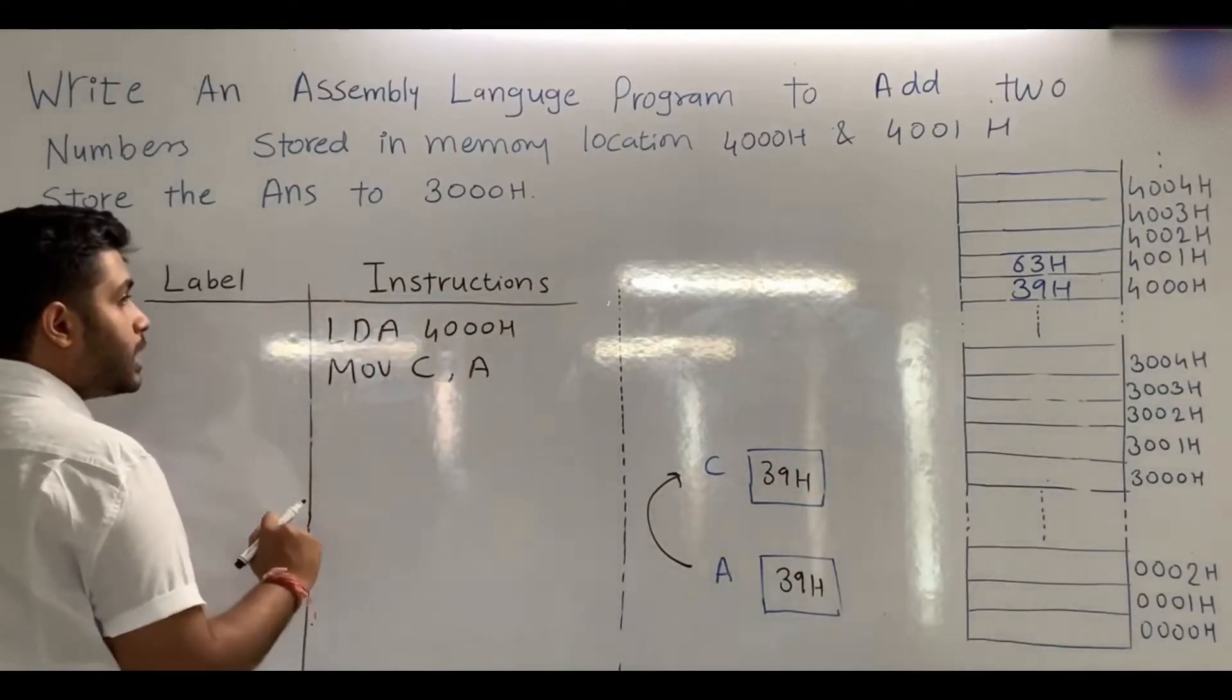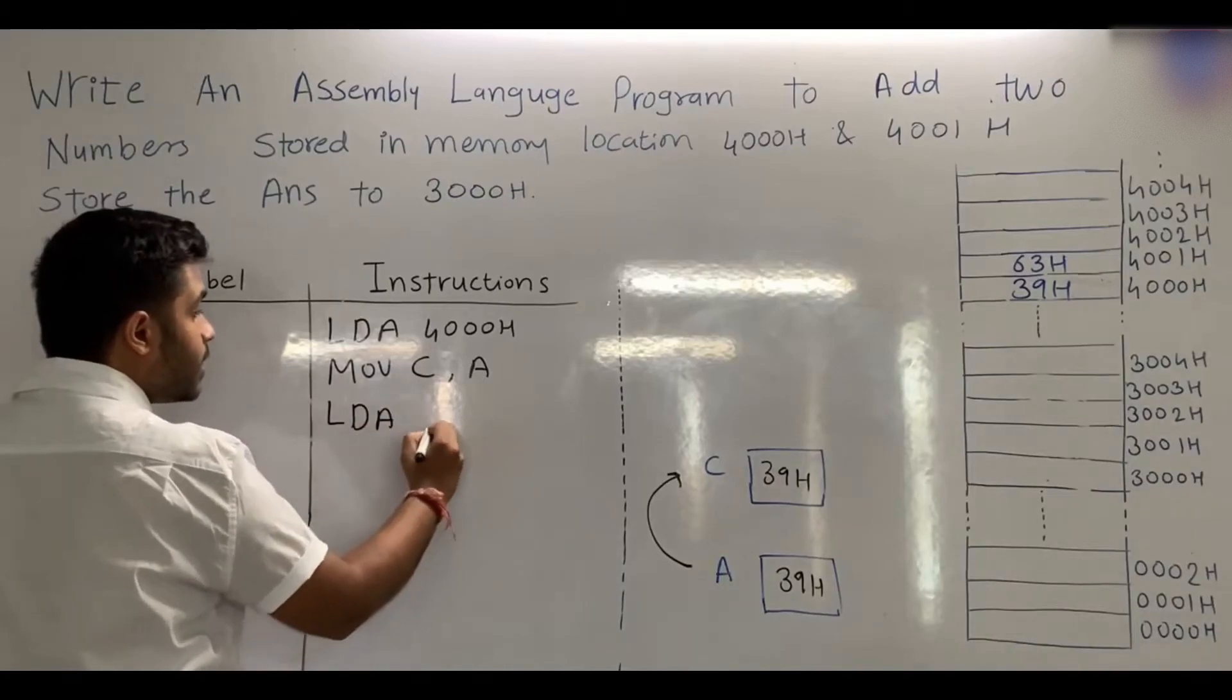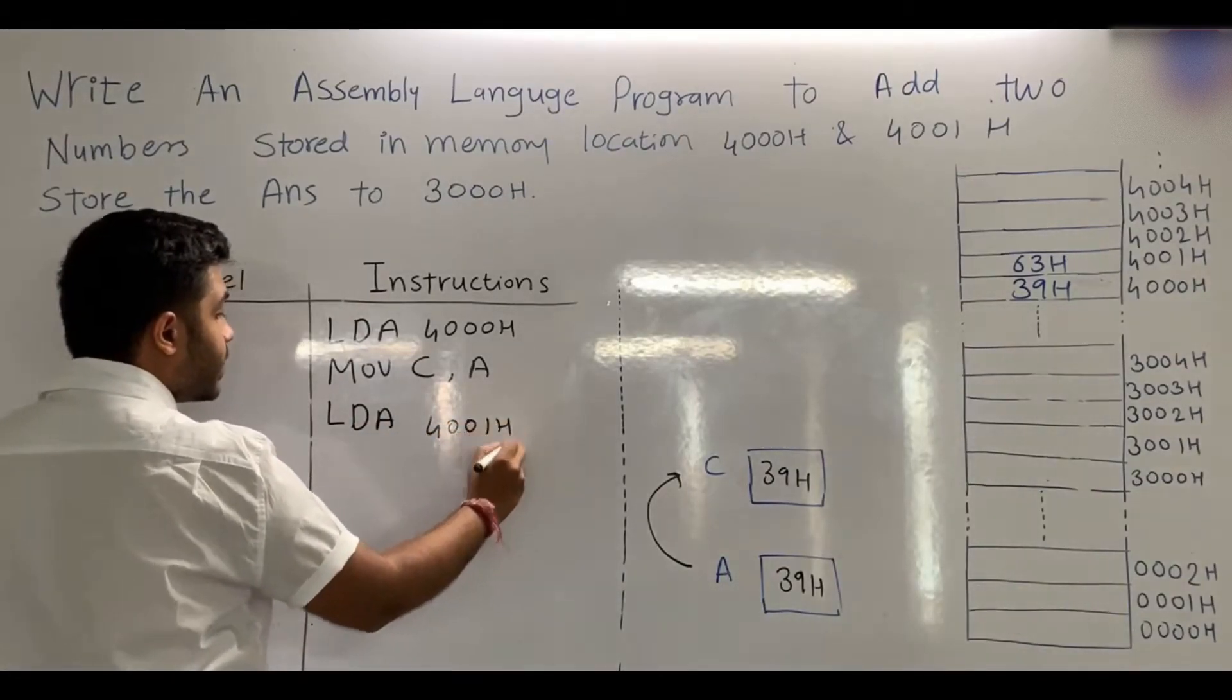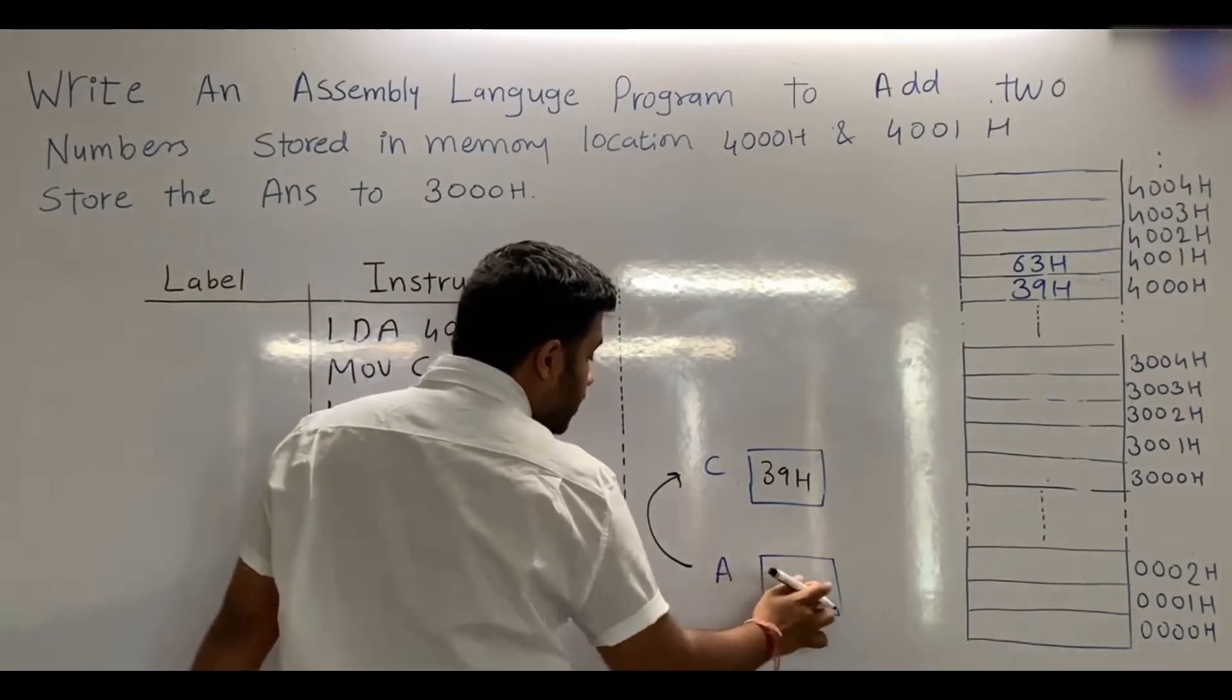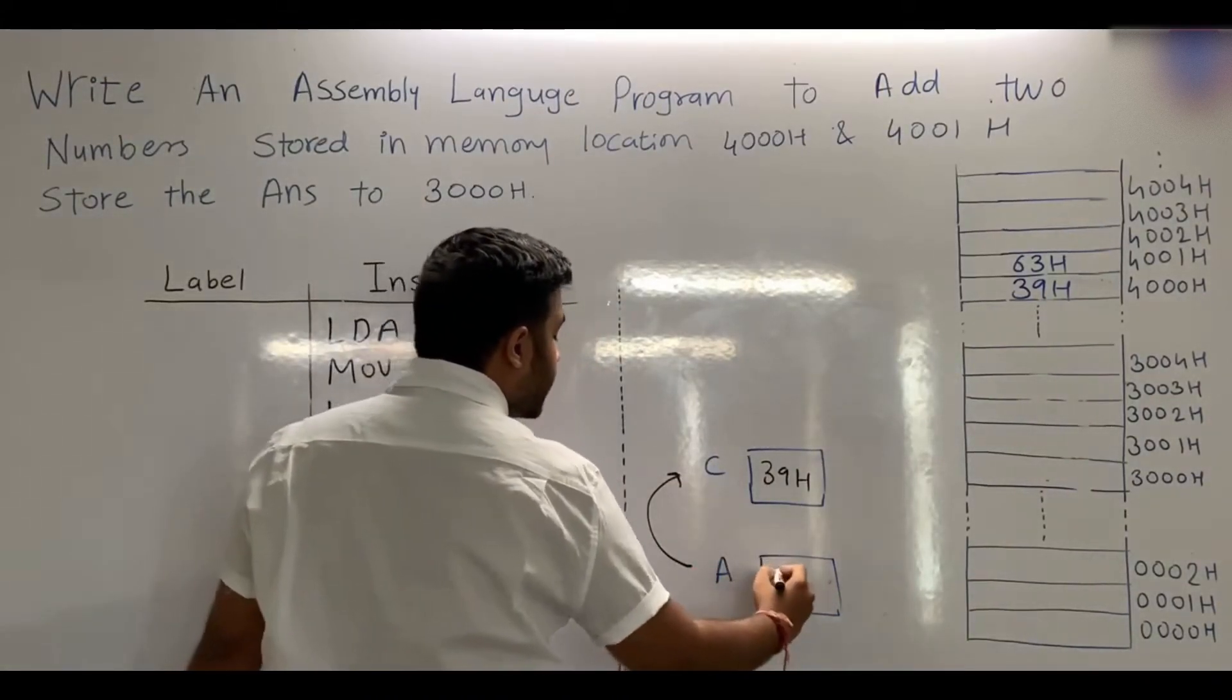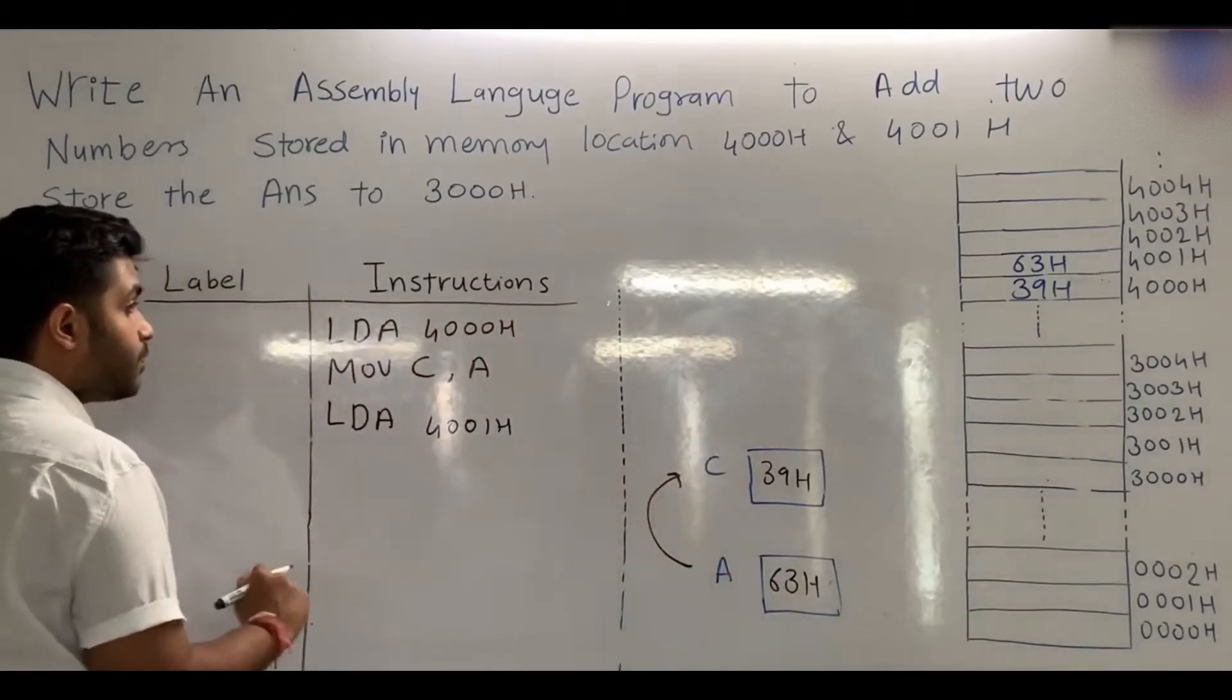After that, we will move the next data to the accumulator using the instruction LDA 4001H. When we use LDA 4001H, the data in the accumulator will be overwritten and we will get the next data, which is 63H.